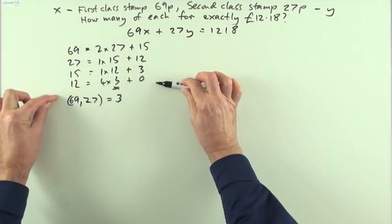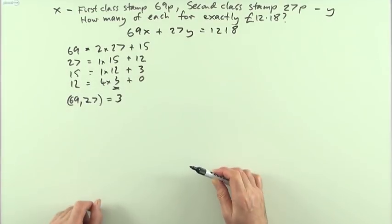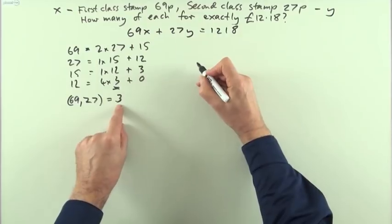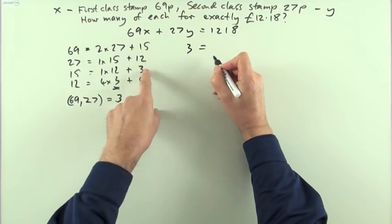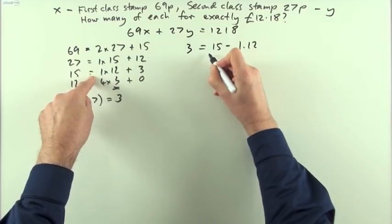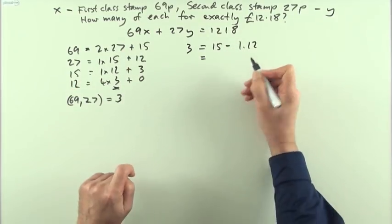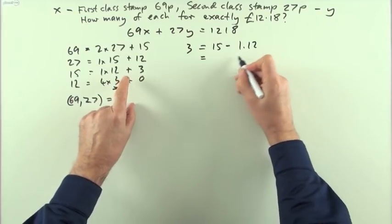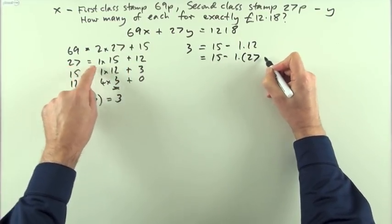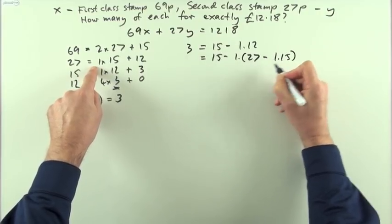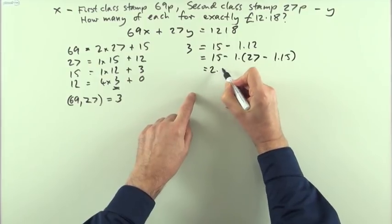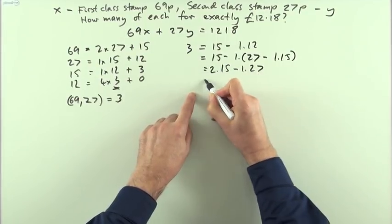But the handy thing in doing this though, obviously, is so I can read them backwards and find a solution to this. So what have I got? I've got 3 is equal to 15 take away 1 times 12. I'll just use a dot instead of the multiply just to save some ink. Then 12 can be written as 27 take away 1 times 15. Tidy that up, I've now got plus 1 and another one is 2 lots of 15, take away 1 lot of 27.